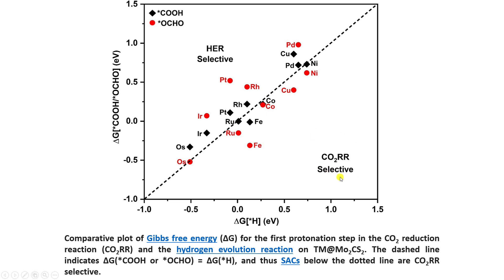The dotted line divides the plot: the top region is HER selective and the bottom region is CO2RR selective. For example, looking at the FE catalyst — the circled dotted marker is the OCHO intermediate and the diamond marker is the COOH adsorption. The lower marker represents the HER adsorption energy.